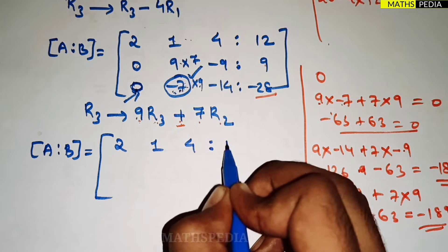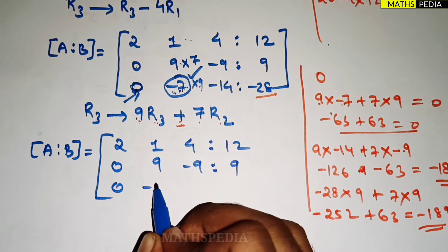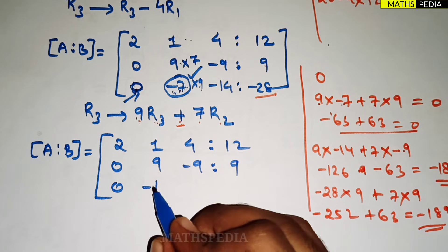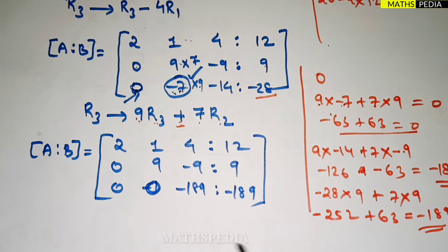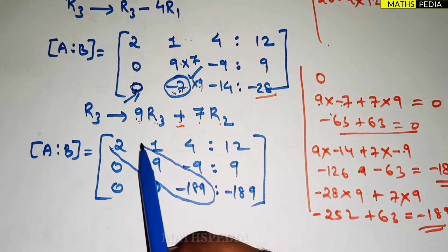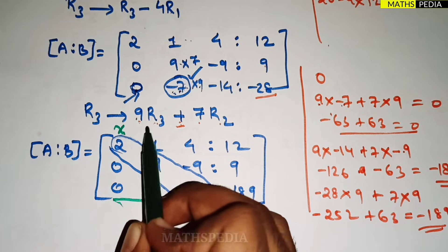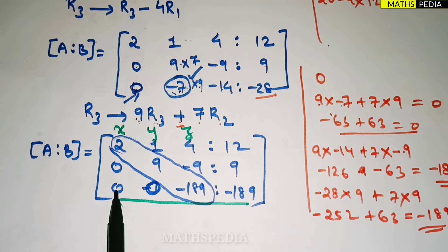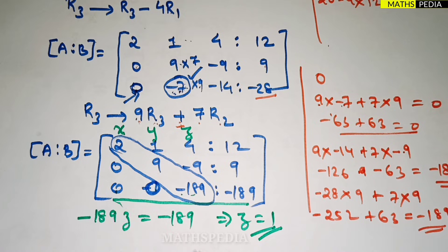The final augmented matrix is: row 1: 2, 1, 4, 12; row 2: 0, 9, minus 9, 9; row 3: 0, 0, minus 189, minus 189. Below the diagonal all elements are 0 — this is the upper triangular form. Now writing the equation from the last row: minus 189*z = minus 189, so z = 1.